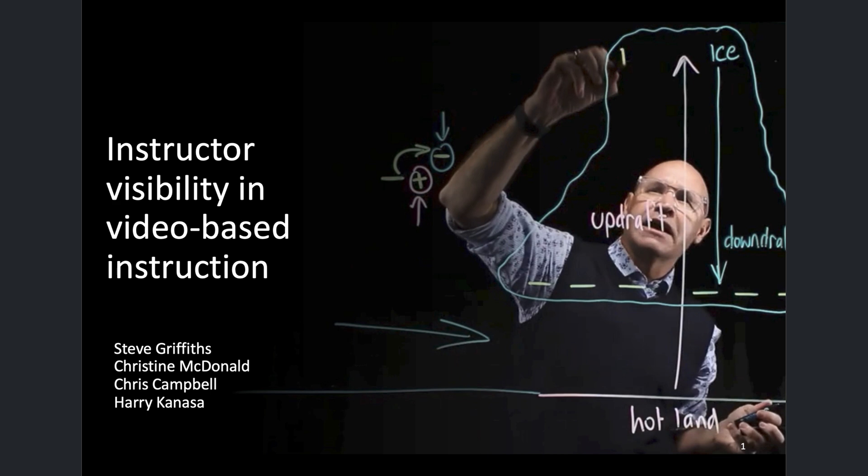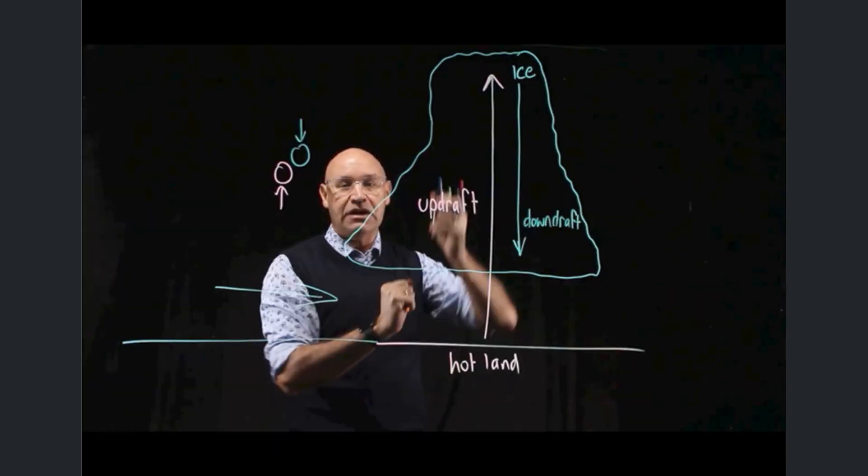What's really cool is he didn't just look at test scores. He wanted to understand how seeing an instructor in a video actually changes the way our brains are processing information. Dr. Griffiths showed students a video lesson about lightning formation. But here's the thing. He split the students into two groups.